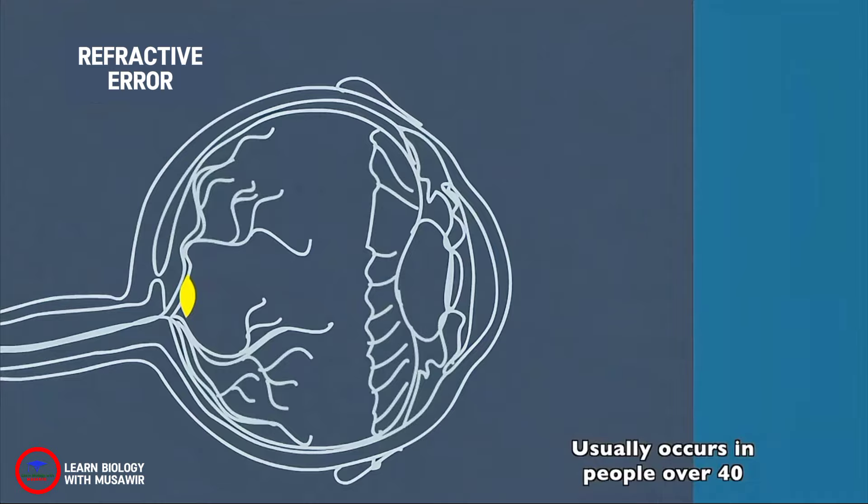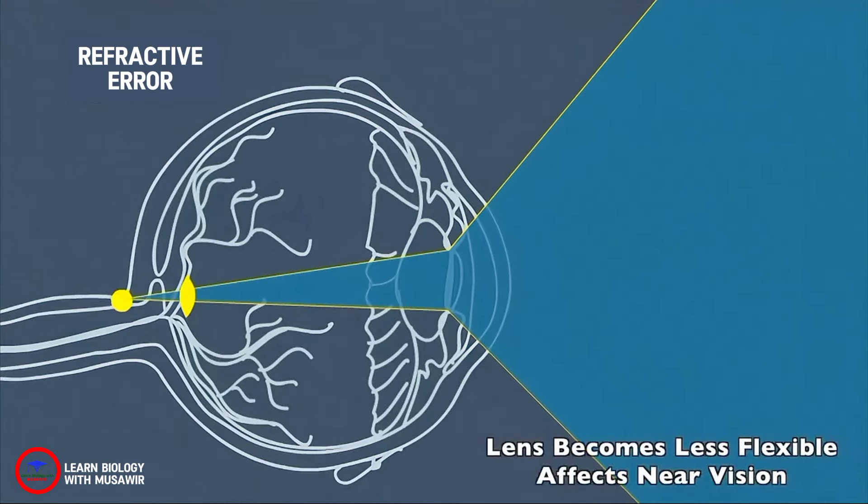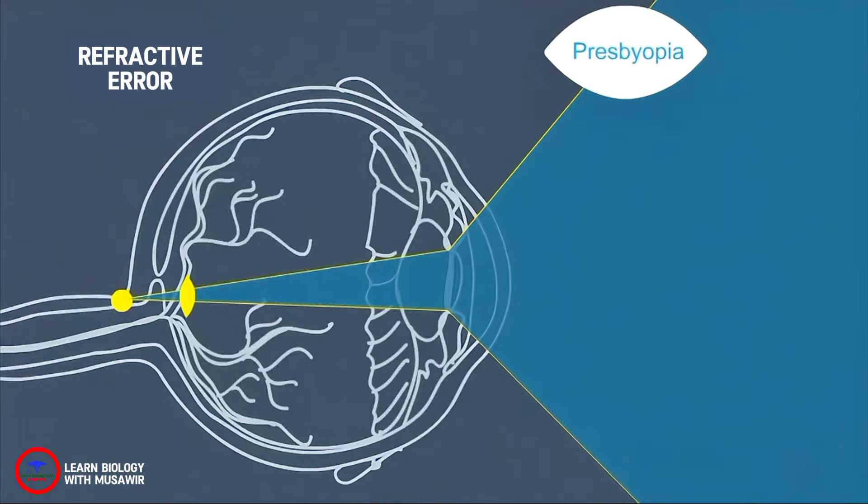Presbyopia is a normal condition that typically begins after 40 years of age. The lens becomes less flexible and less able to focus on closer objects, making them blurred.